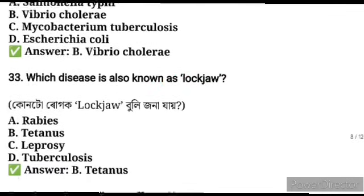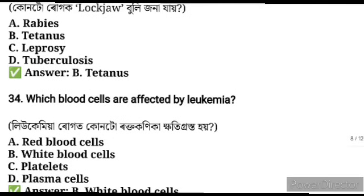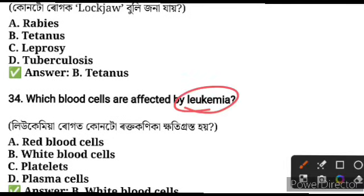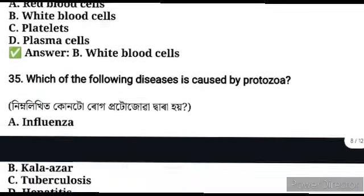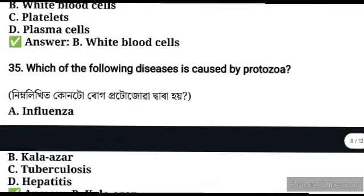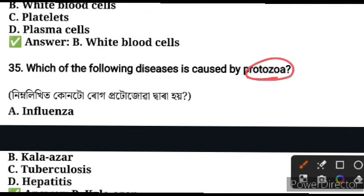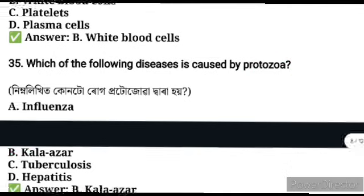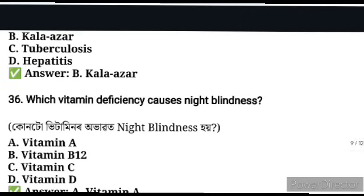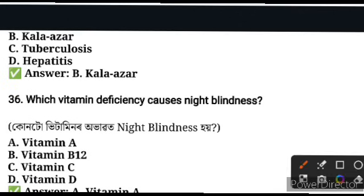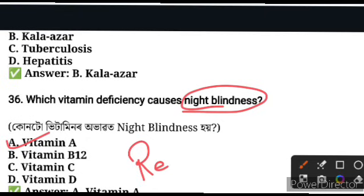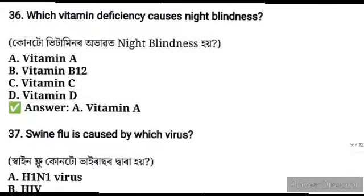Tetanus is also known as lockjaw. Leukemia affects the blood cells — blood cells are affected by leukemia. Which of the following is caused by protozoa? Malaria is caused by protozoa. Which vitamin deficiency causes night blindness? Vitamin A deficiency causes night blindness. Vitamin A is also known as retinol.